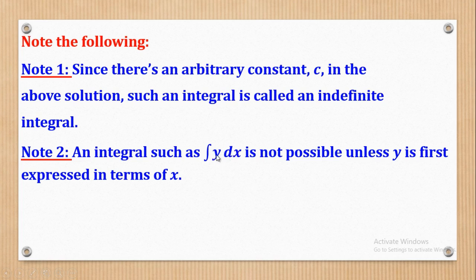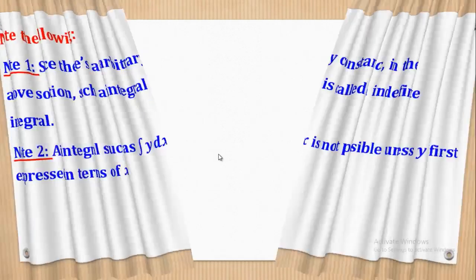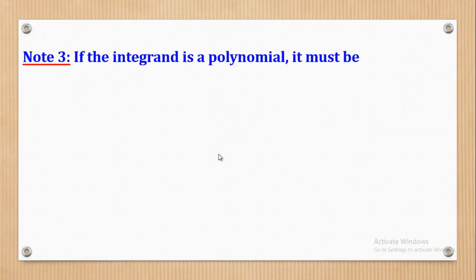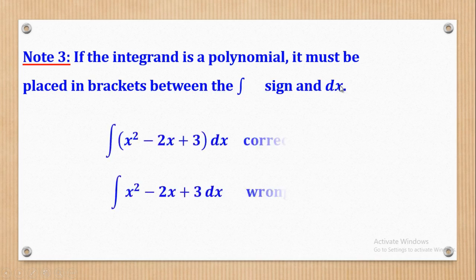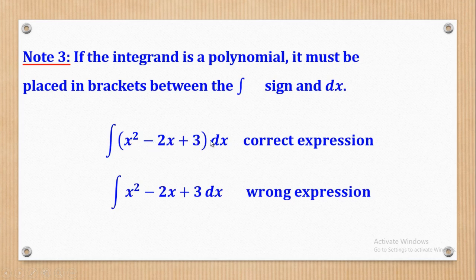For example, y can be equal to x squared plus 1, so for you to integrate, you have to first substitute for y and integrate x squared plus 1 dx. The third note is that if the integrand is a polynomial, it must be placed in brackets between the integral sign and the dx sign. For example, if the polynomial is x squared minus 2x plus 3, it has to be in brackets — without brackets it is a wrong expression. Always remember to use brackets when dealing with integrations of polynomials.